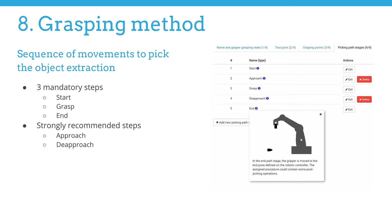Now, let's continue with configuring a grasping method. The grasping method represents the strategy for the robot movements. There are three mandatory steps: start, grasp, and end. In addition, there are two strongly recommended steps: approach and de-approach. By clicking on the small info sign, the user can call a tooltip window with a short description and visualization of the movement.